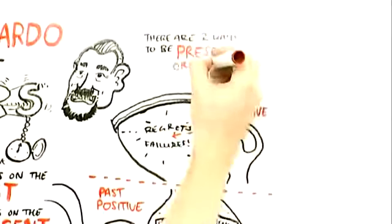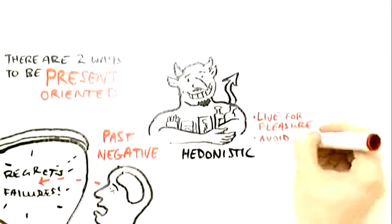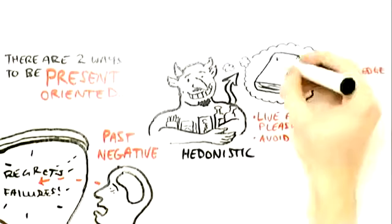There are two ways to be present-oriented. The most obvious is to be hedonistic, that you live for pleasure and you avoid pain. You seek novelty, you seek sensation.